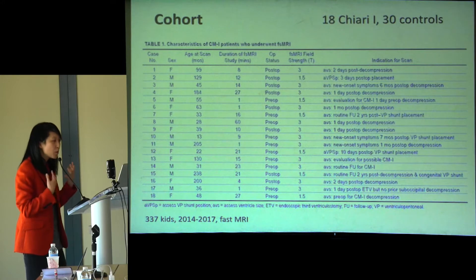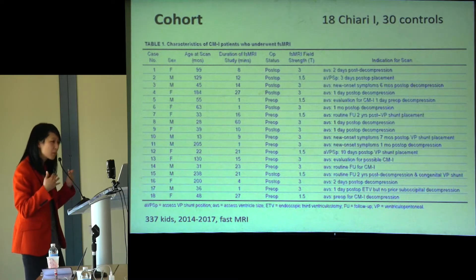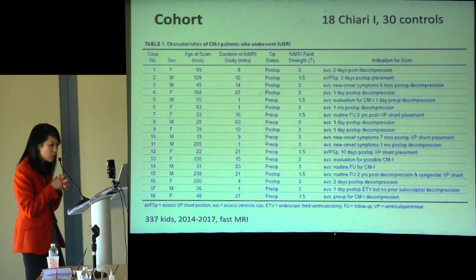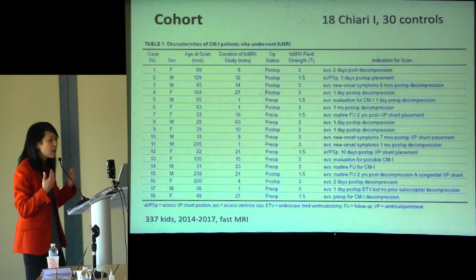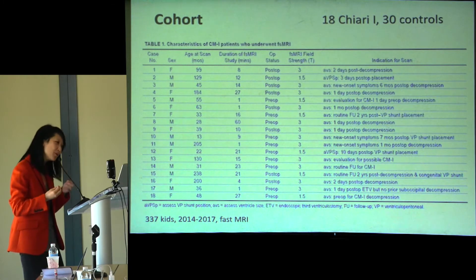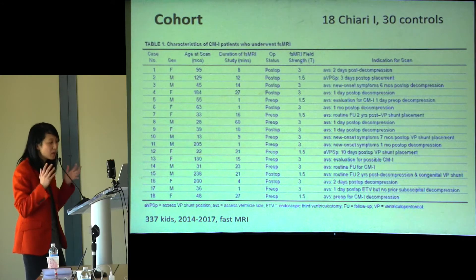Within this group, we identified those with abnormal tonsillar configuration or low-lying tonsils, defined as lower than five millimeters below the foramen magnum. We found about 18 kids and 30 controls, all with three-plane fast spin echo single-shot images taking about 20–30 seconds each. We identified a cohort that also had conventional standard-of-care MRI with T2 imaging within a year and without an intervention in between, giving us a comparison — though not a perfect one.